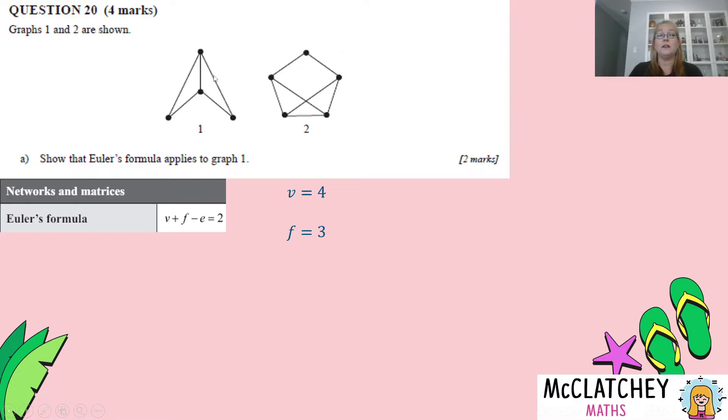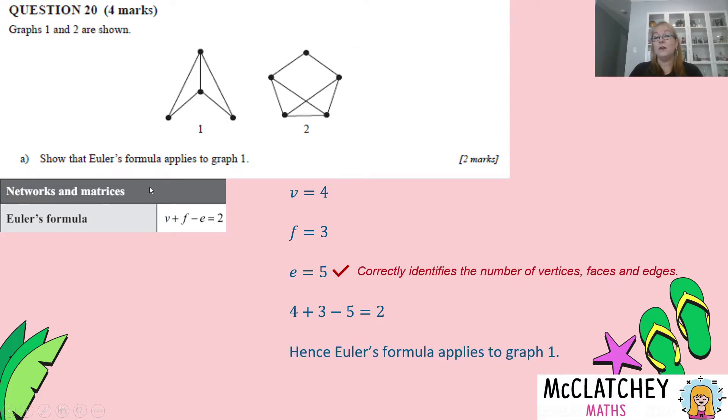And then edges. We've got one, two, three, four, five. Five edges. Let's substitute that into Euler's formula now. Now we get a mark here because we've correctly identified those. That might also be inferred by our substitution as well. So we've got four vertices plus three faces take away five. So four plus three makes seven. Take away five. That equals two. And that proves the formula is correct. So hence, we're showing that we need to give a statement at the end. Euler's formula applies to graph one. We get our second mark here for applying the formula.